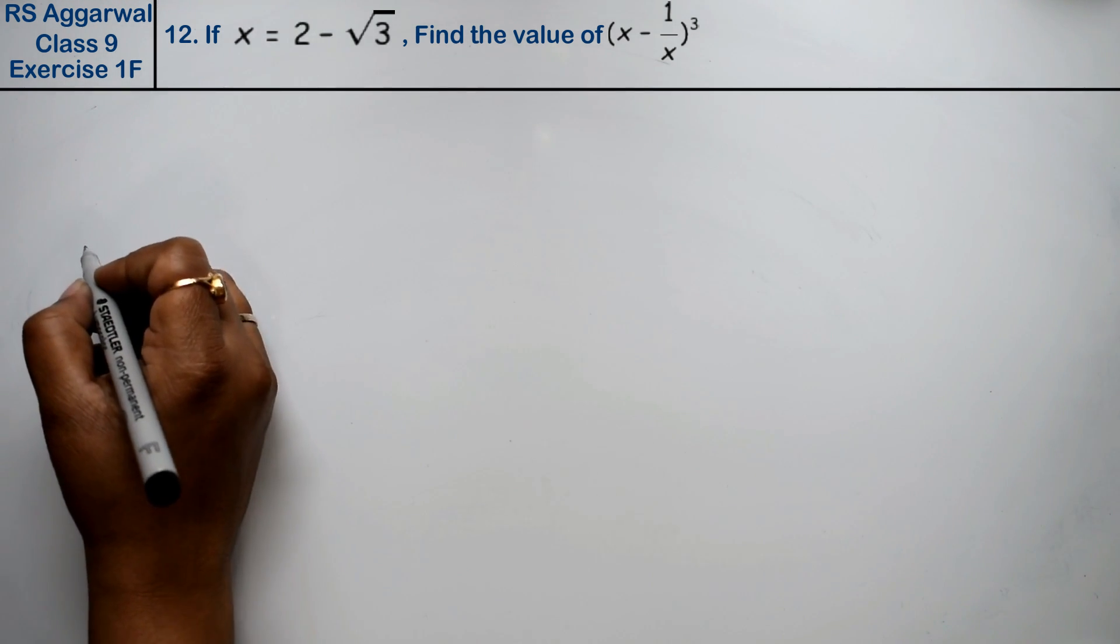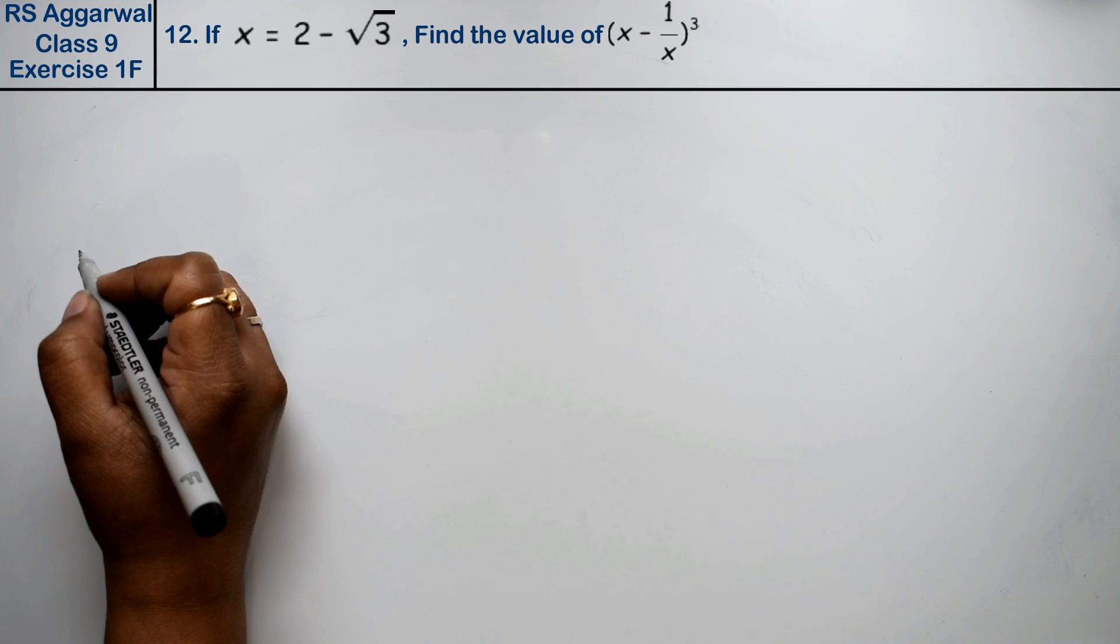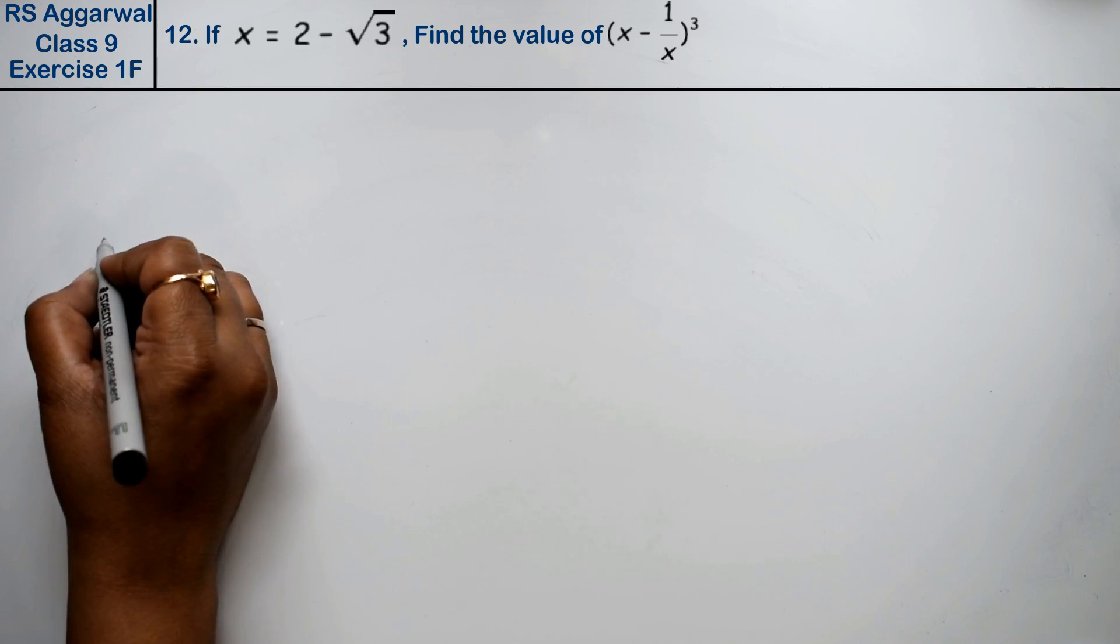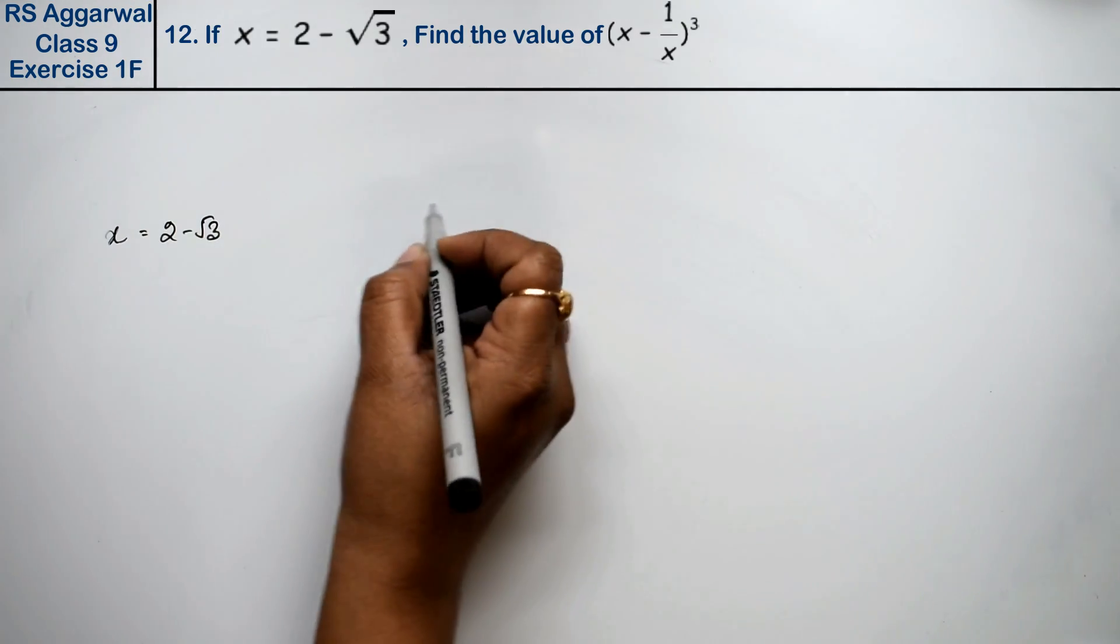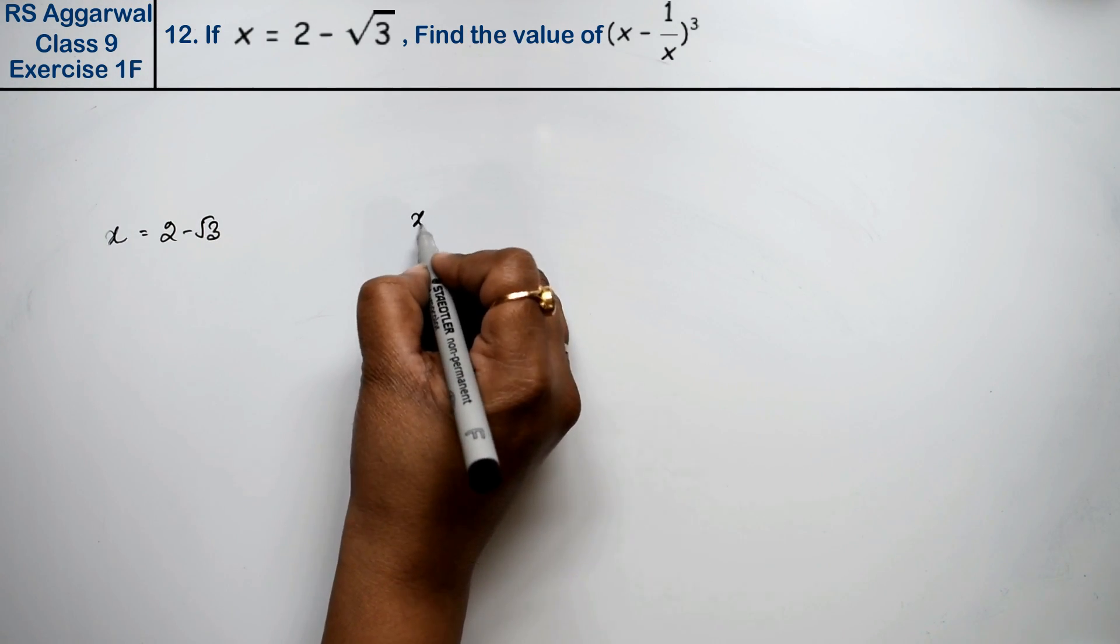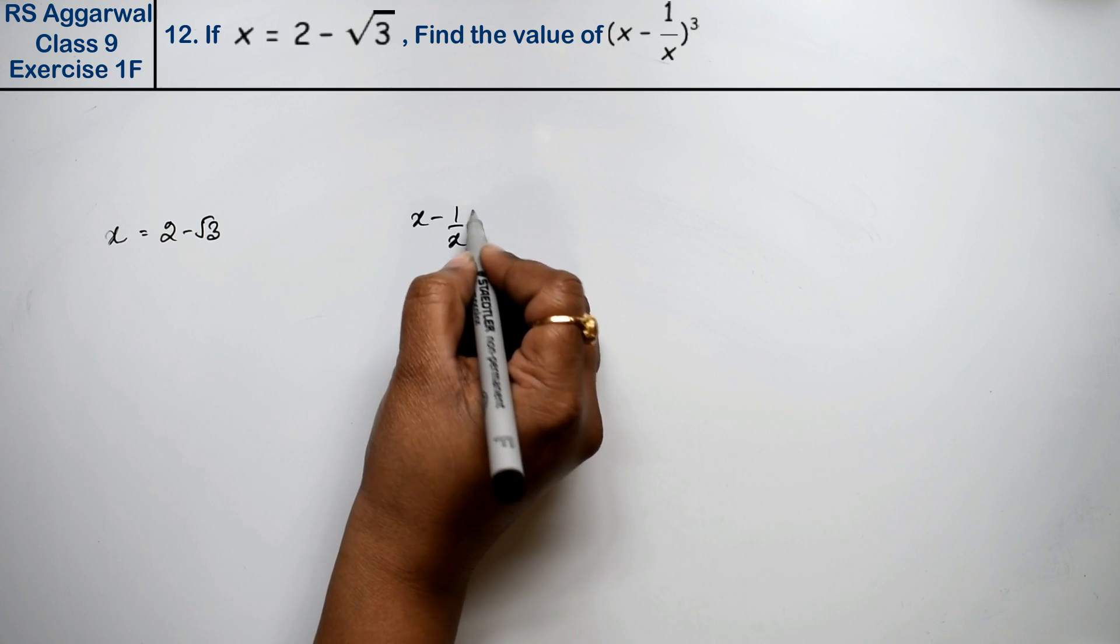Let's do question number 12 of exercise 1F from the number system. Question 12 is: if x equals 2 minus root 3, find the value of (x minus 1/x) whole cube.